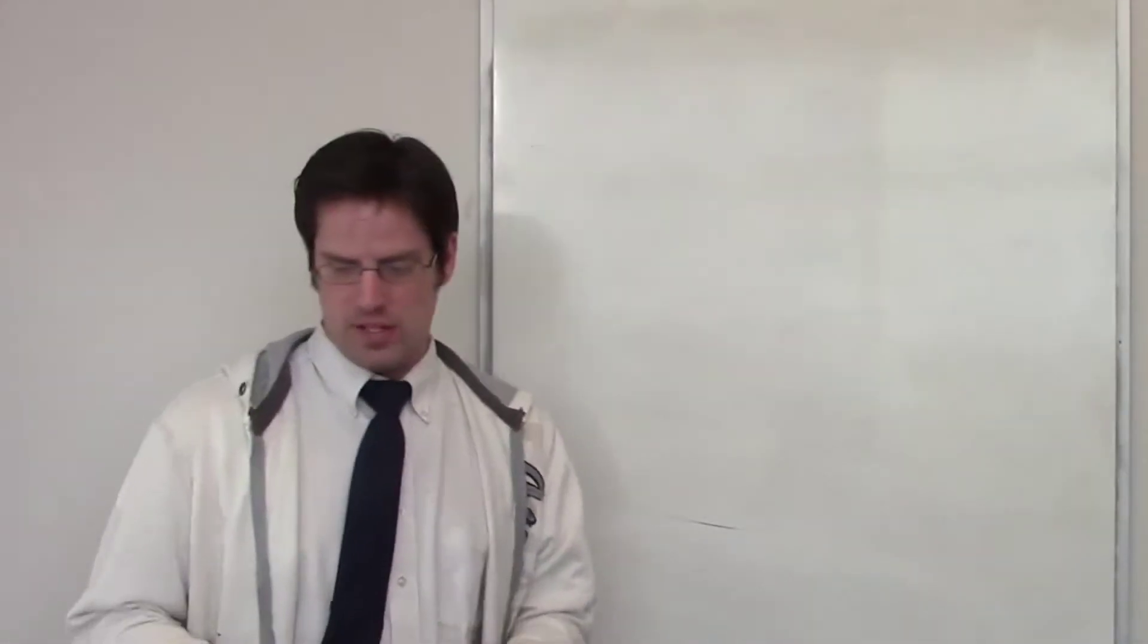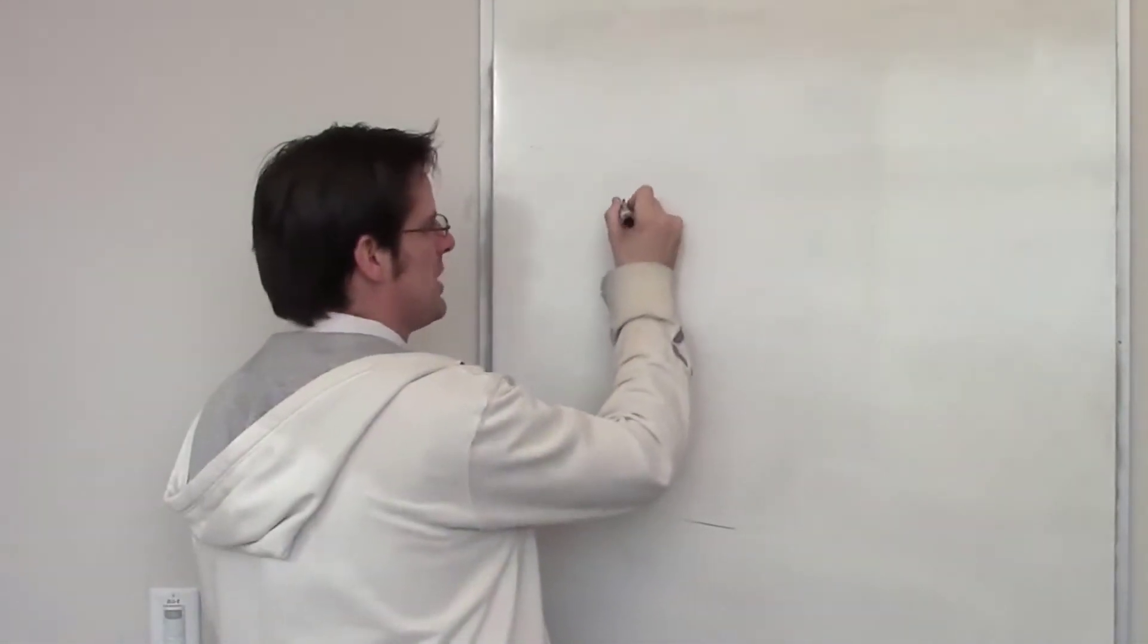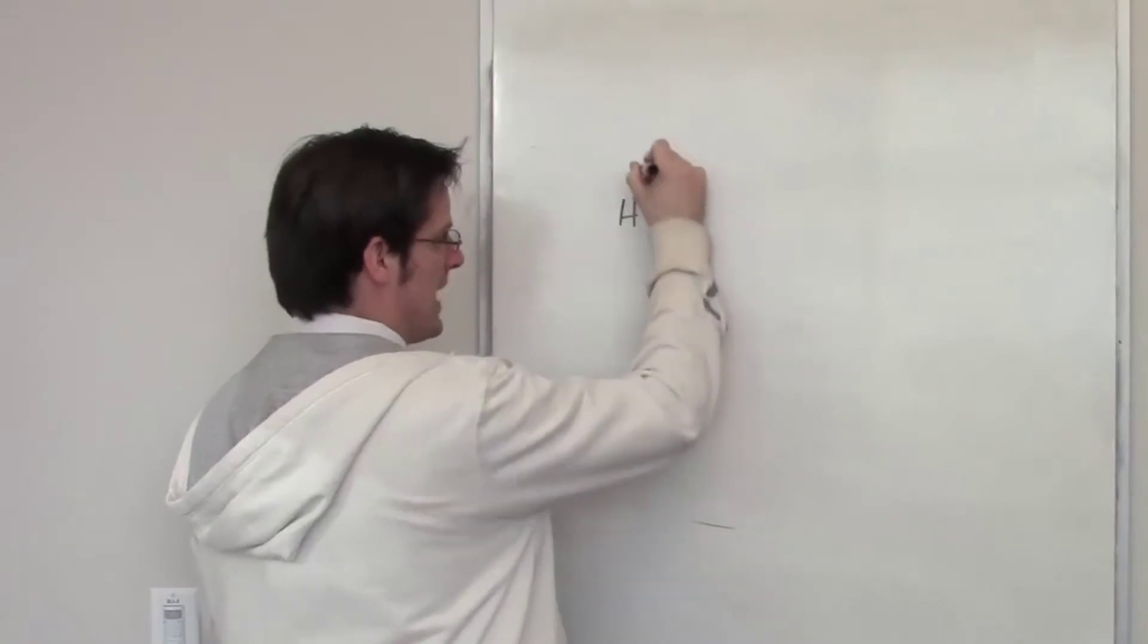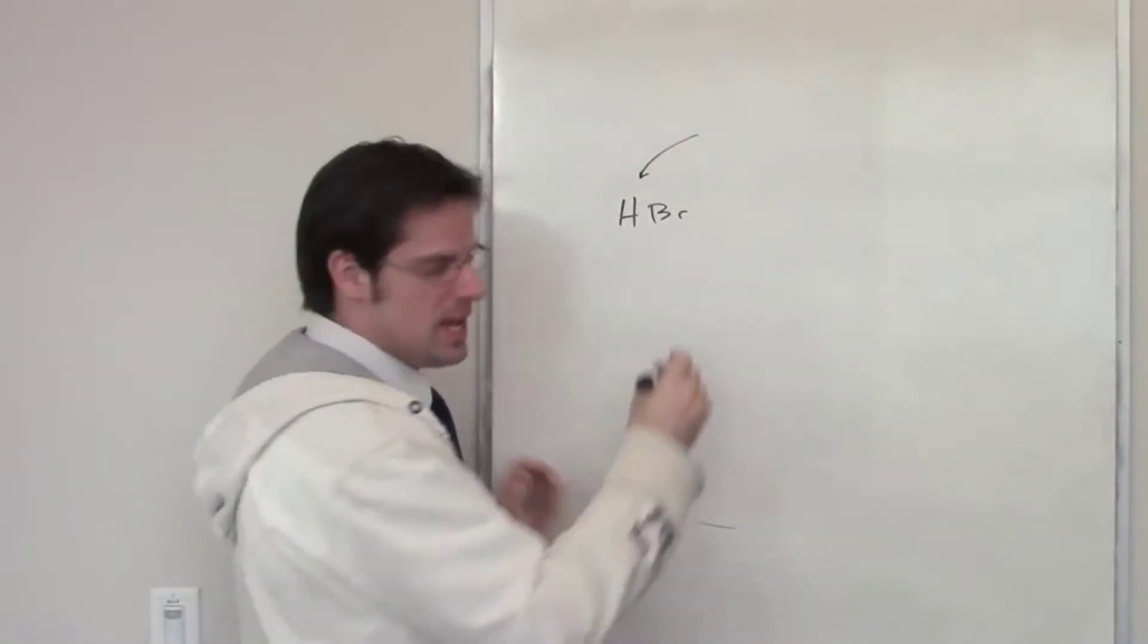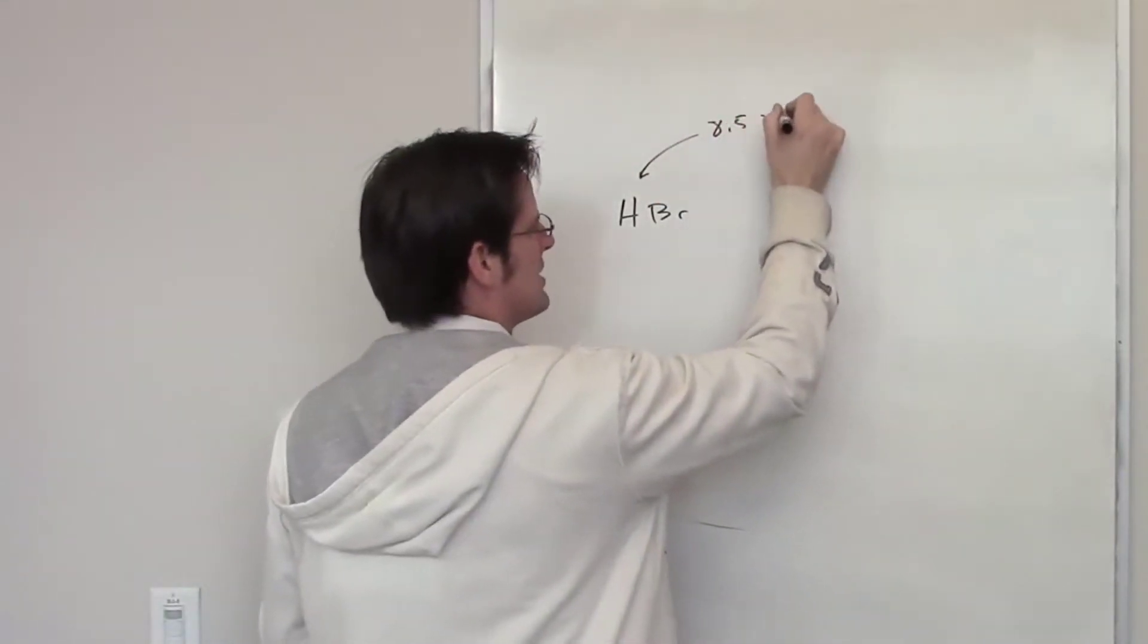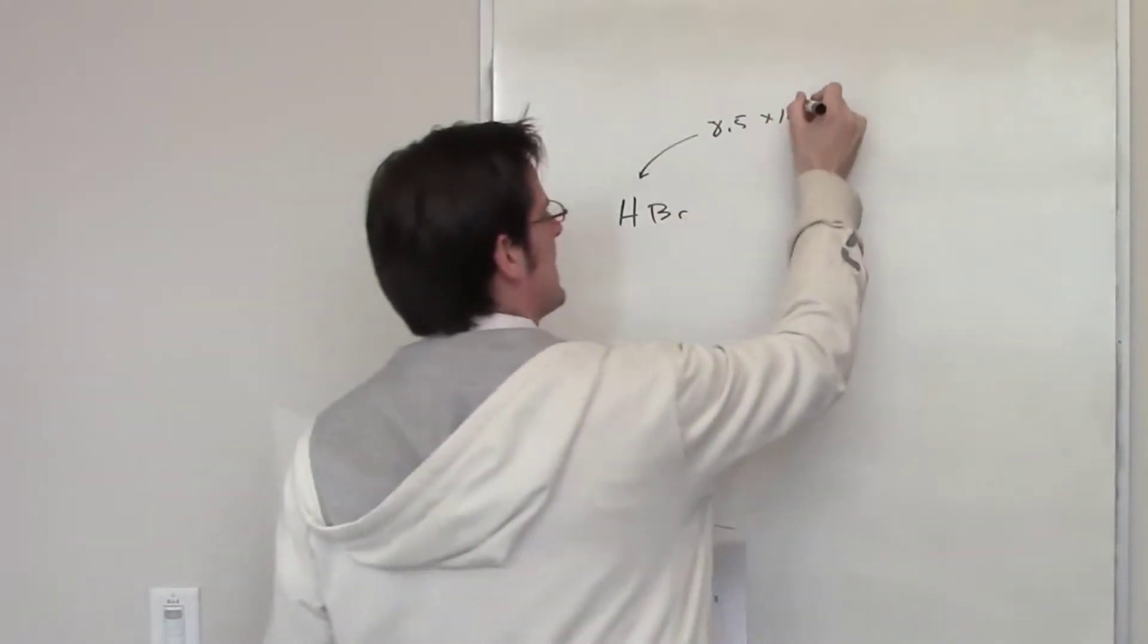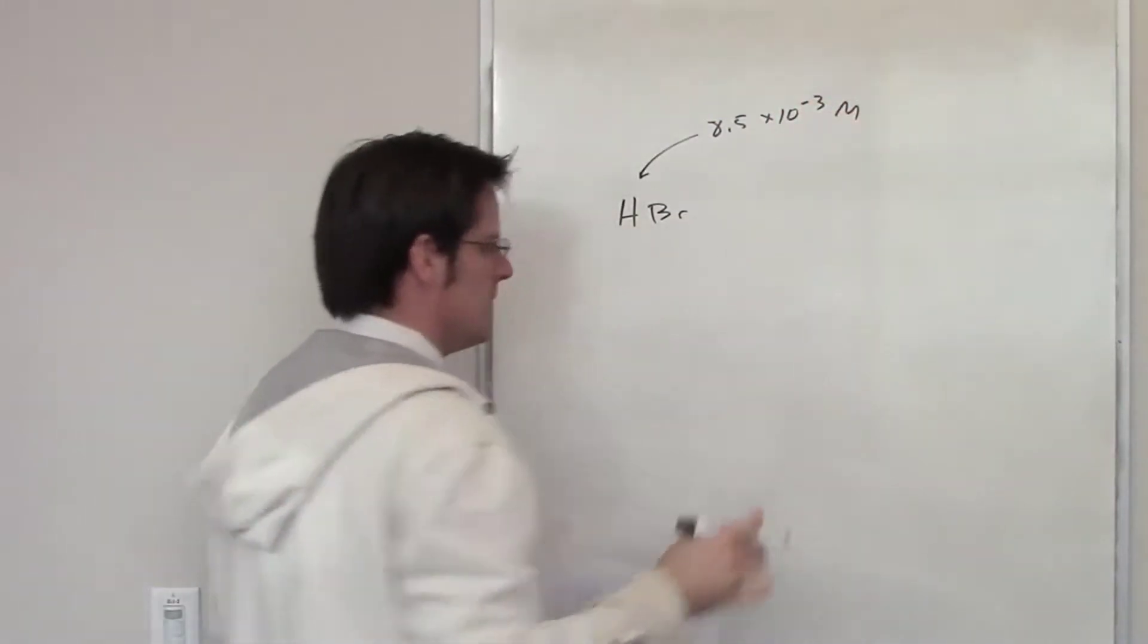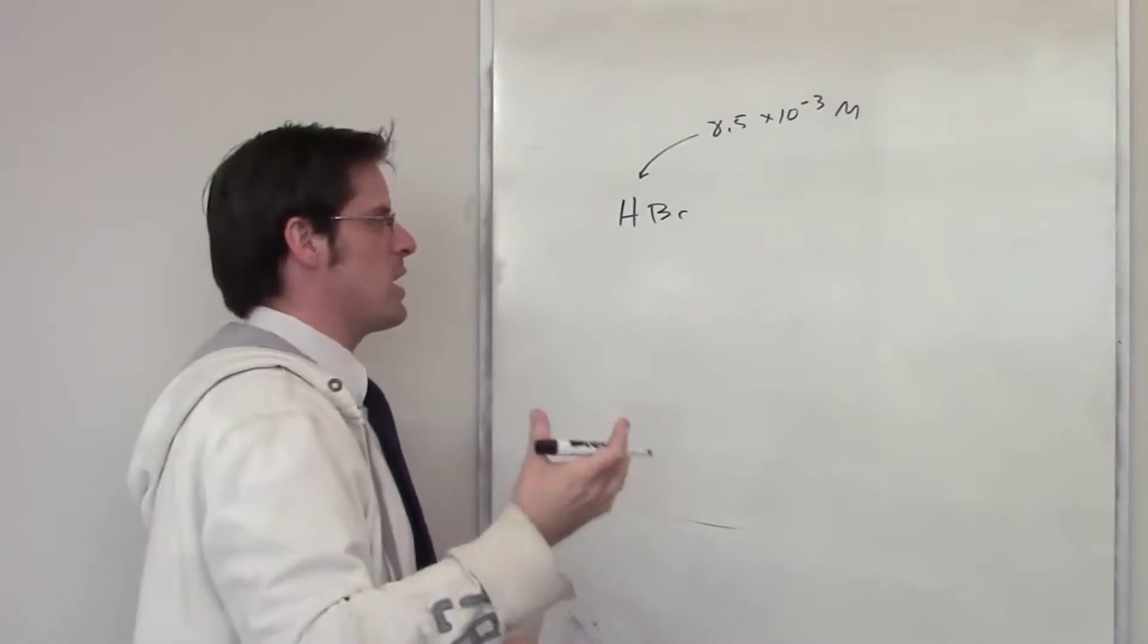What is the pH of an aqueous solution of HBr whose concentration of HBr starts out as 8.5 × 10^-3 molar? It tells us in this problem that HBr is a strong acid.